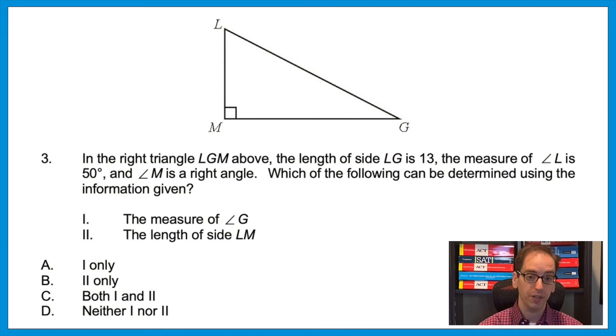In the right triangle LGM above, the length of side LG is 13, the measure of L is 50 degrees, and M is a right angle. Which of the following can be determined using the information given? Let's start with statement one: can we find the measure of angle G with the given information? Well, we know that L is 50 degrees and they tell us that M is a right angle, which means it's 90 degrees. And all three angles of a triangle have to add to 180.